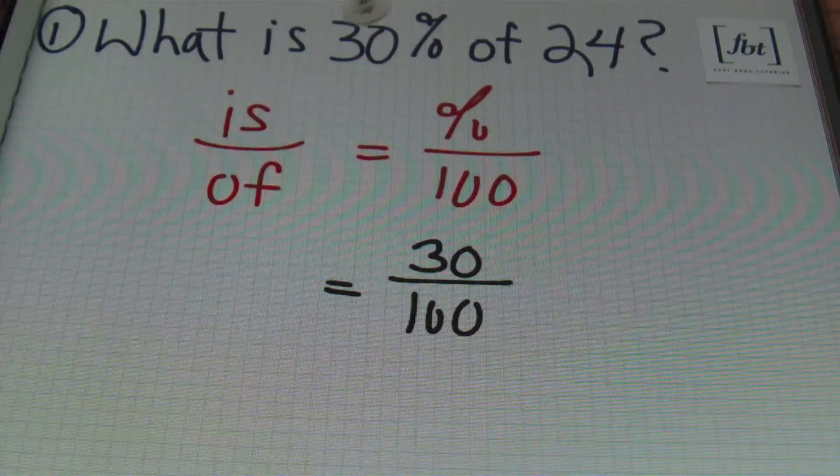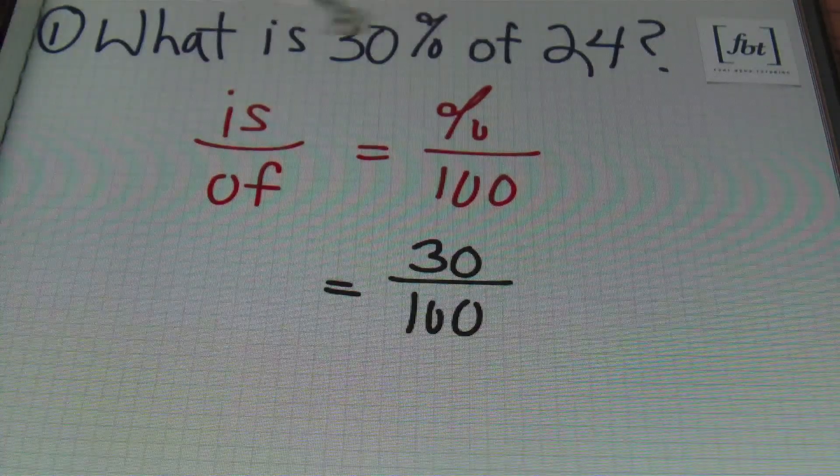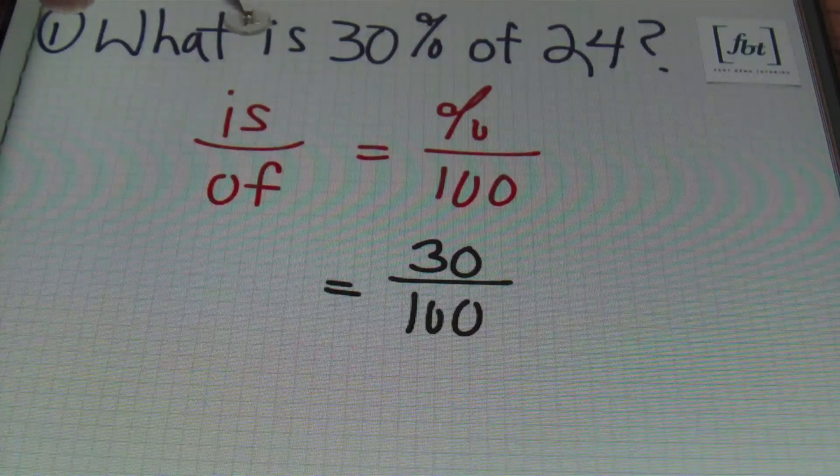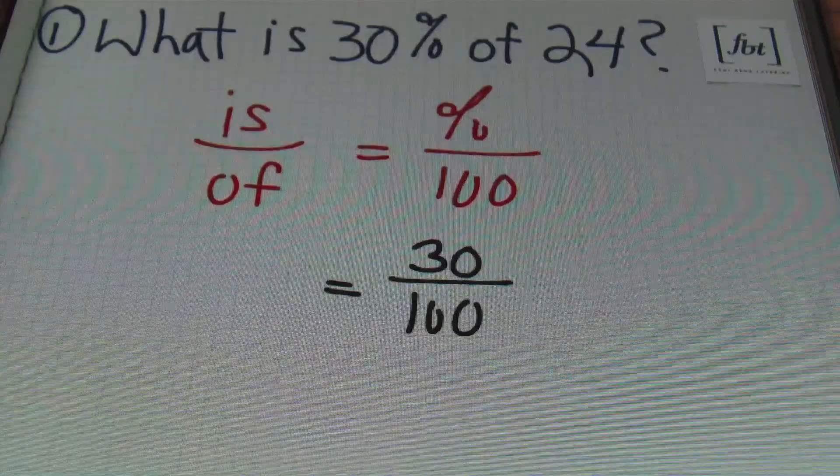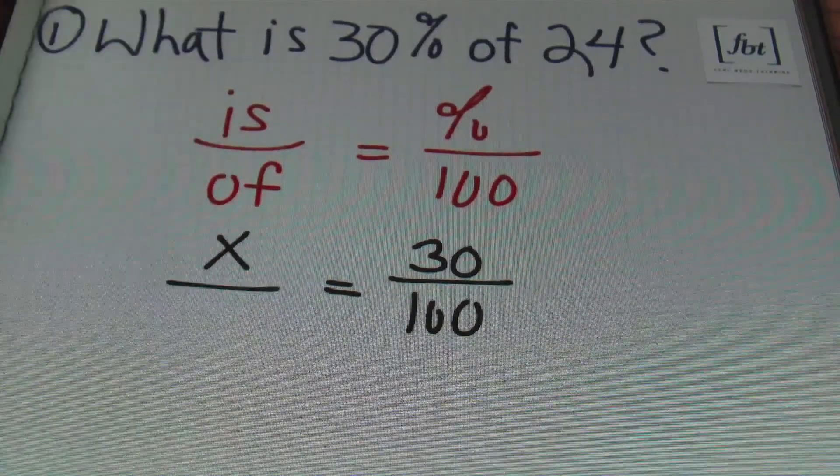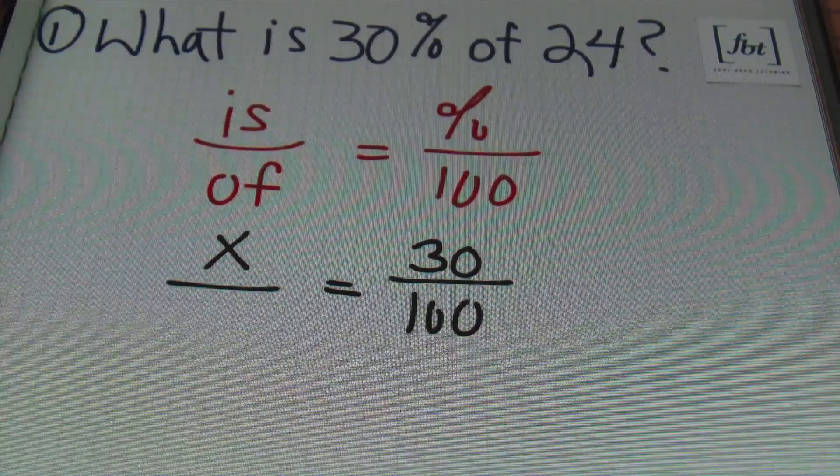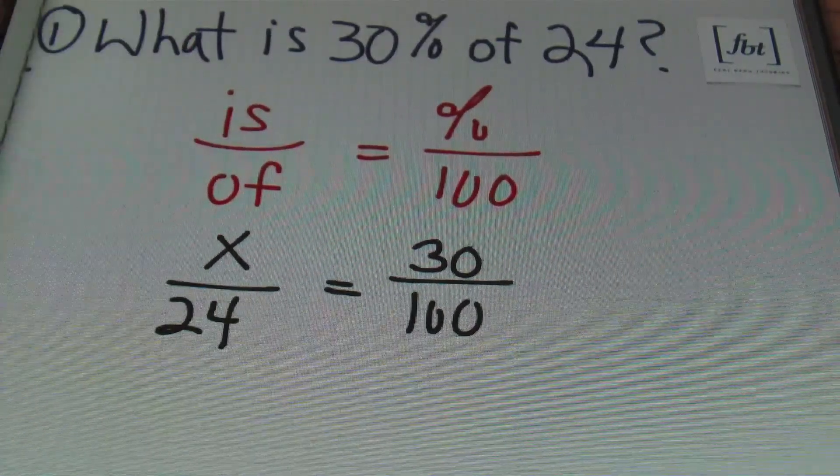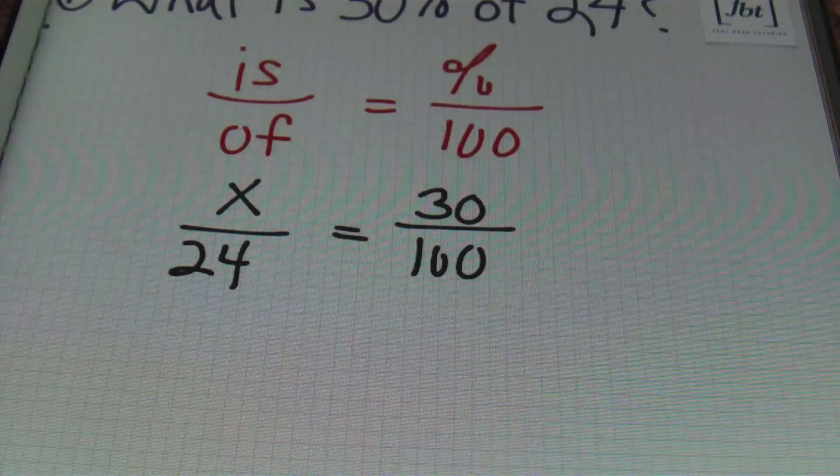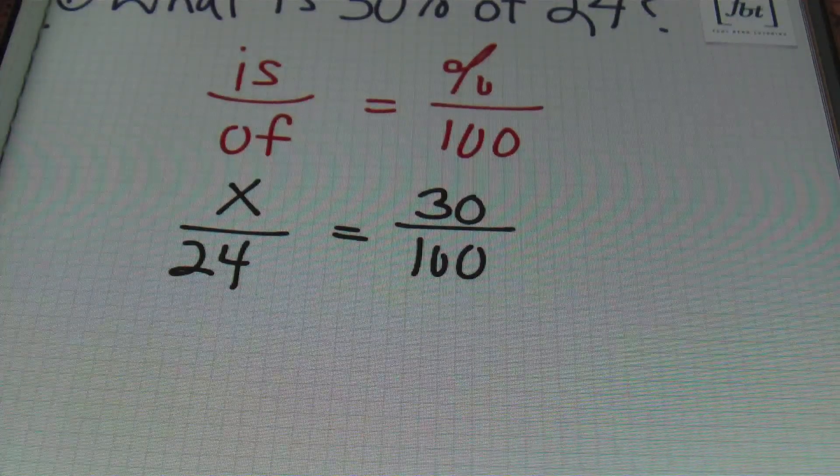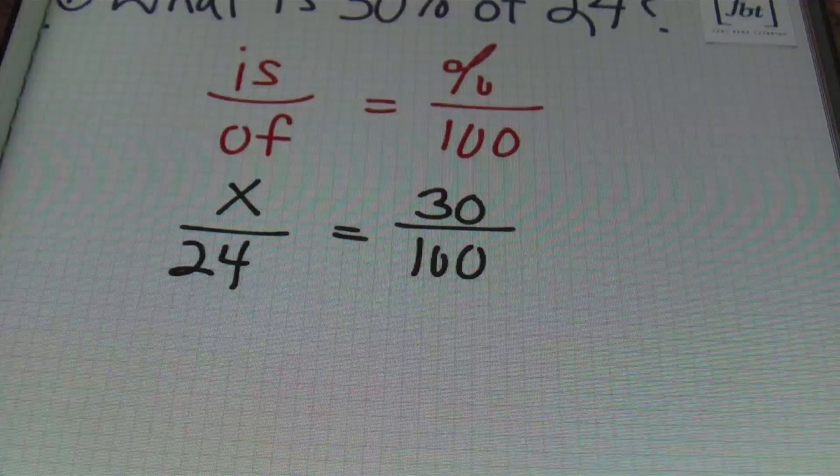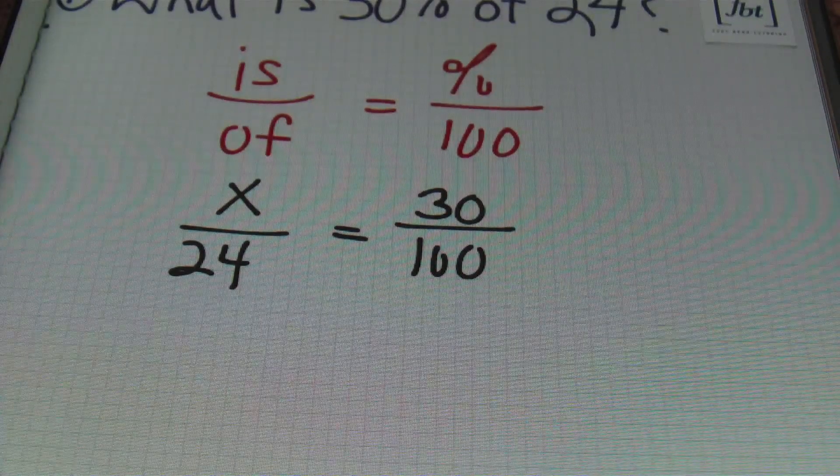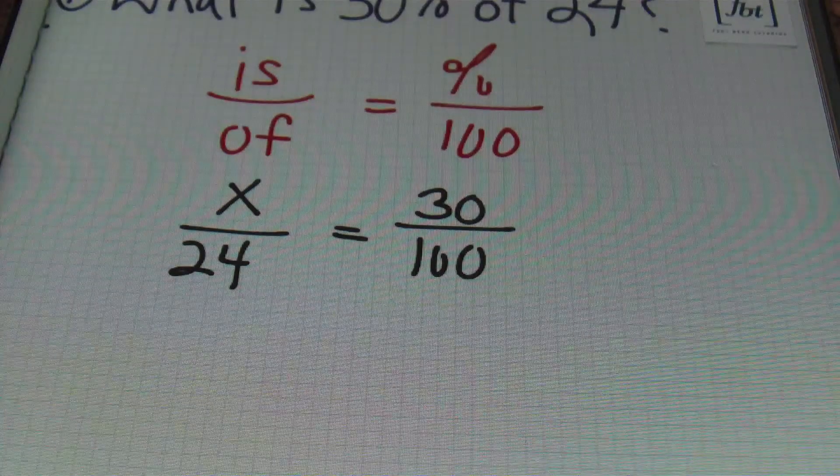We know that the percent is 30%, and the percent goes right over this 100. So I'm going to start out by saying 30 over 100. From there, this percent is separating our expression. To the left is 'what', so our 'is' value is a variable - we don't know what it is, so I'm going to use x again. Then this says 'of 24', so 24 must be our 'of' value.